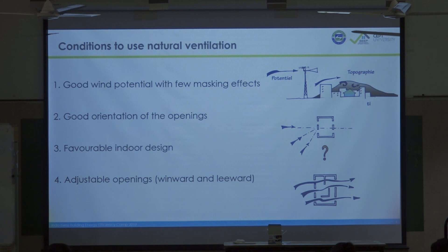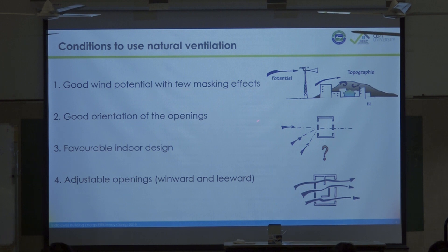Once you have done these preliminary conditions, there are other conditions to use natural ventilation. You have to check that you have a good wind potential on site. We will see how to check if the wind potential is enough. Then you have to have a good orientation of the openings — this angle must be at least 30 degrees.